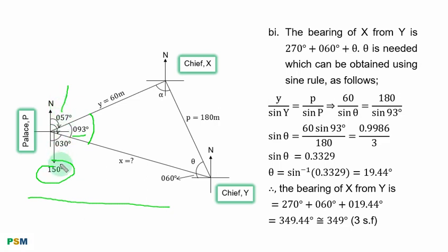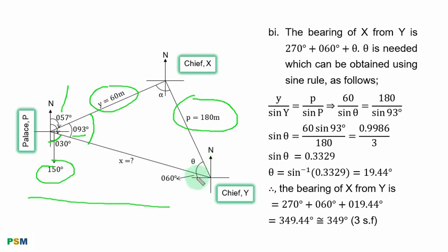This whole side is 180 degrees, so the remaining part must be 030 degrees. PS is 60 meters, SY is 180 meters. The angle at S (alpha) and the angle at Y (theta) are both unknown. From the north to this line is 060 degrees. Why? Because this quadrant is 90 degrees; if from the north to Y's direction is 030 degrees, the remaining angle must be 060 degrees, which equals this angle by alternate angles.